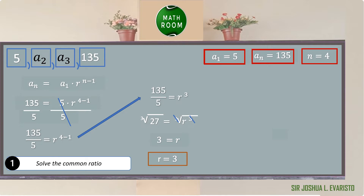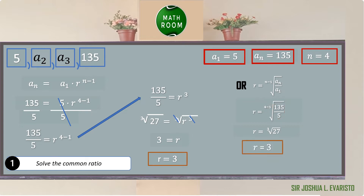Let's verify using the simplified formula: r equals the (n minus 1) root of a sub n over a sub 1. By substitution, r equals the (4 minus 1) root of 135 over 5, which is the cube root of 27, which equals 3. Therefore, the common ratio is confirmed to be 3.